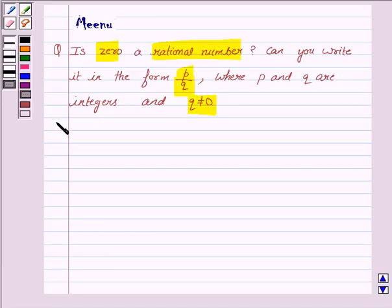Let's now move on to the solution. The answer to the first question is yes, zero is a rational number.